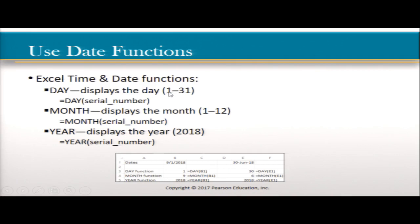More into Excel date functions. The DAY function displays the day number from a date. The syntax is just DAY and a serial number. Here is an example of the DAY function: DAY with the argument B1, and it shows it's the first day based on that date. Here again, DAY of E1 — the date is June 30th, so the result is 30.